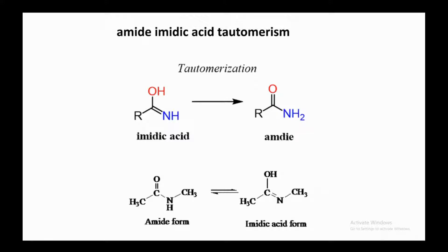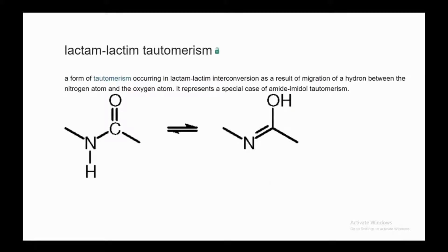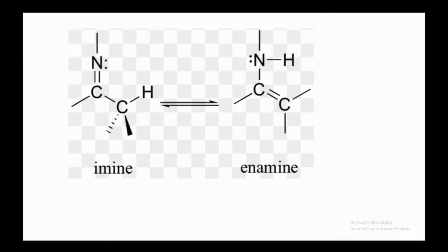Reviewing earlier types: amide–imidic acid tautomerism — the nitrogen donates its proton to oxygen, shifting the double bond from C=O to C=N. Lactam–lactim tautomerism occurs in cyclic amides via migration of hydrogen between the nitrogen and oxygen atoms; it is a special case of amide–imidol tautomerism. In imine–enamine tautomerism, C=N shifts to C=C and nitrogen gains the proton in the enamine form.